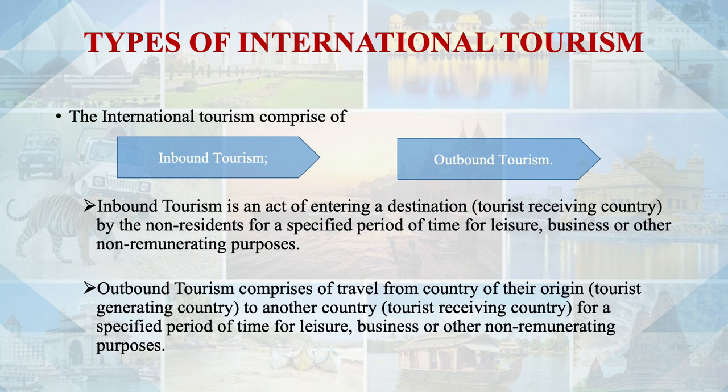For example, a tourist from the United States who comes to India is considered an inbound tourist, and this type of tourism is called inbound tourism. Outbound tourism comprises travel from the country of origin to another country — from the tourist generating country to the tourist receiving country — for a specified period of time for leisure, business, or other non-remunerative purposes. For example, if an Indian resident travels to France, he is an example of outbound tourism for India, and at the same time, for France, he will be an inbound tourist.